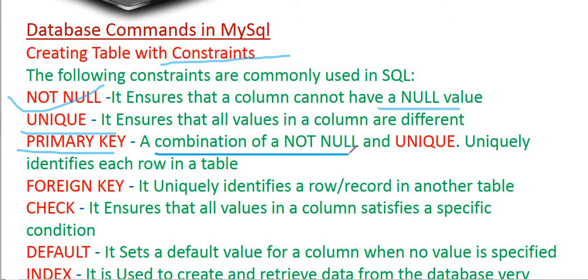PRIMARY KEY is a combination of NOT NULL and UNIQUE. So if you need to apply both NOT NULL and UNIQUE conditions on a particular column at the same time, you use PRIMARY KEY. FOREIGN KEY uniquely identifies a row or record in another table — the first table uses PRIMARY KEY, and the second table uses FOREIGN KEY referencing the same domain.